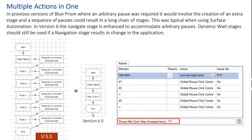In the previous version of Blue Prism, when an arbitrary pause was required it would involve the creation of an extra stage, and a sequence of pauses would result in a long chain of stages. This was typical when using surface automation. In version 6, the navigate stage is enhanced to accommodate arbitrary pauses. Dynamic wait stages should still be used if a navigation stage results in a change in the application.